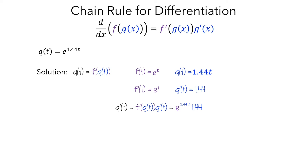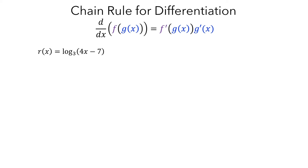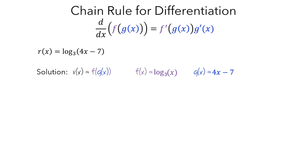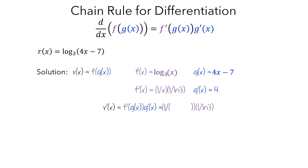Let's look at one more example. Let r be a logarithmic function in terms of x. We first need to recognize that r is a composite function. Here, f, the outside function, is log base 3, and g, the argument, is the linear function 4z minus 7. Next, we compute the derivatives: the derivative of f is 1 over x times 1 over the natural log of 3, and the derivative of g is 4. To apply the chain rule, we take the derivative of the outside function, plug in the argument in place of x, and multiply by the derivative of the argument. We have now stated the chain rule and used it with three different composite functions.